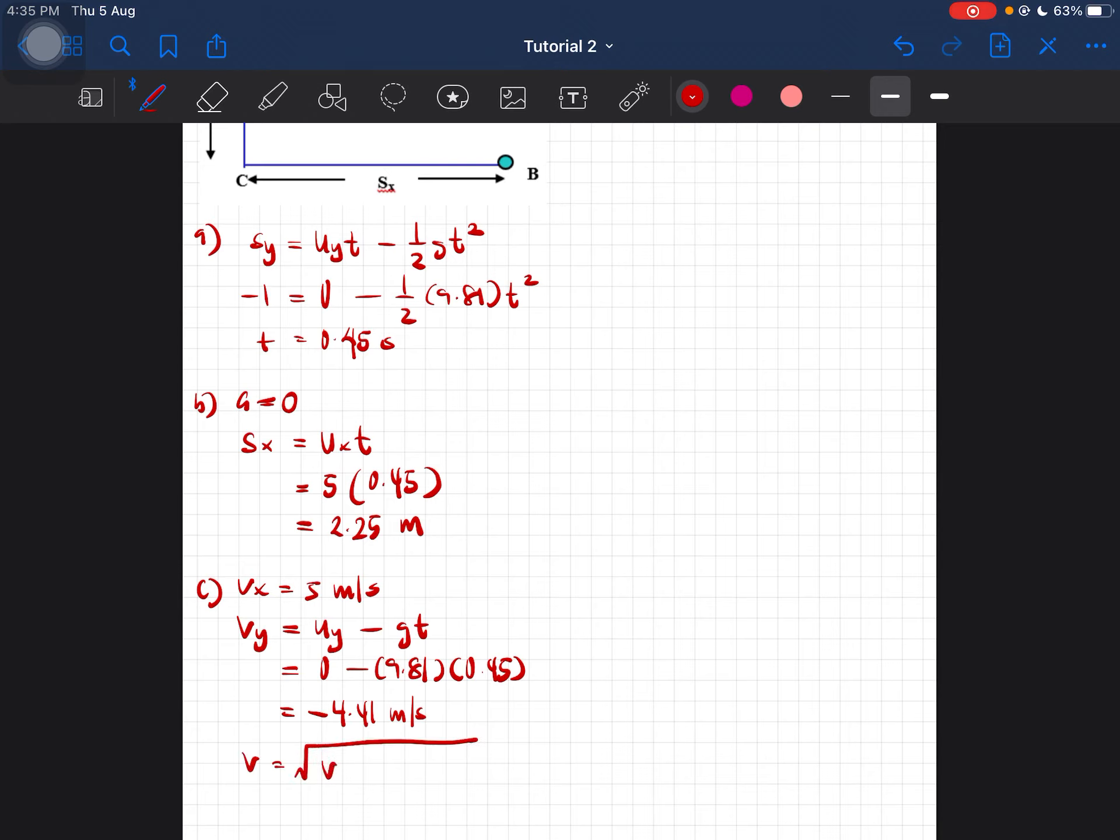Which is the square root of vx squared plus vy squared. Just substitute the values, you'll then get 6.67 meters per second.